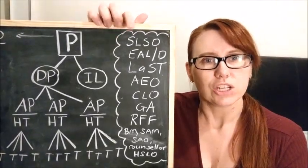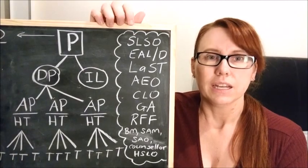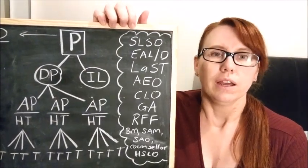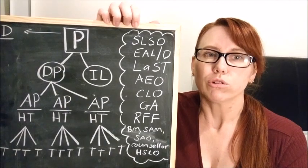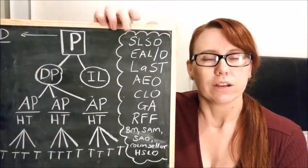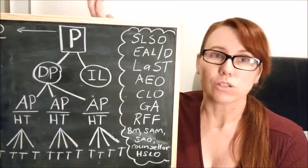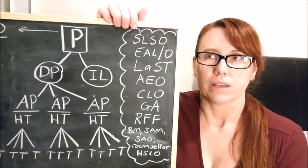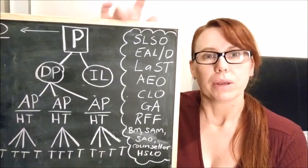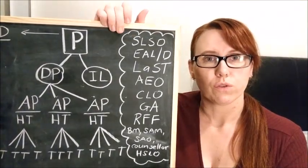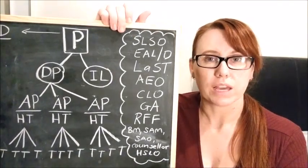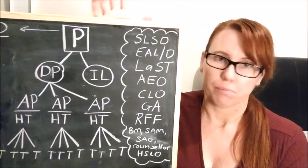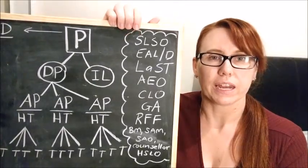EALD. This is English as an additional language or dialect. Some systems still say ESL, English as a second language, or LBOTE, language background other than English. EALD though is a classroom teacher. They're a qualified teacher with a degree in education. They can take classes on their own. But ultimately they're providing support for students who might be new arrivals to the country or who do have English as an additional dialect. Based on student need really, how that can happen.